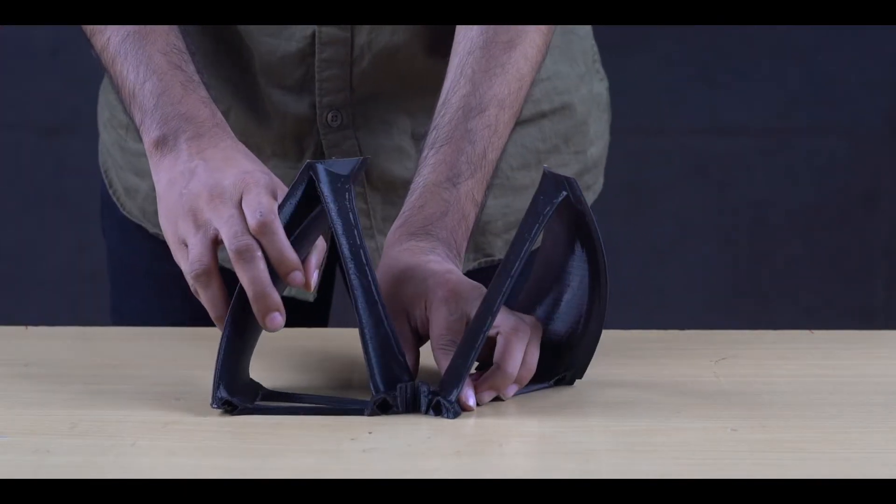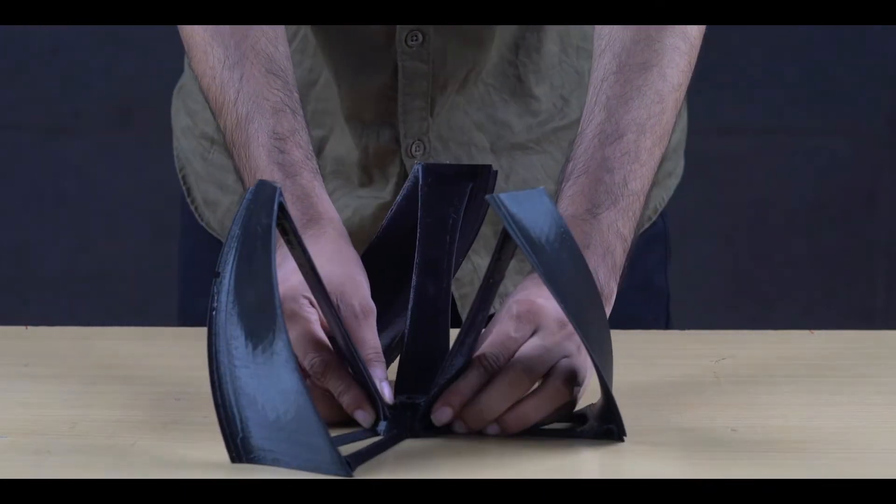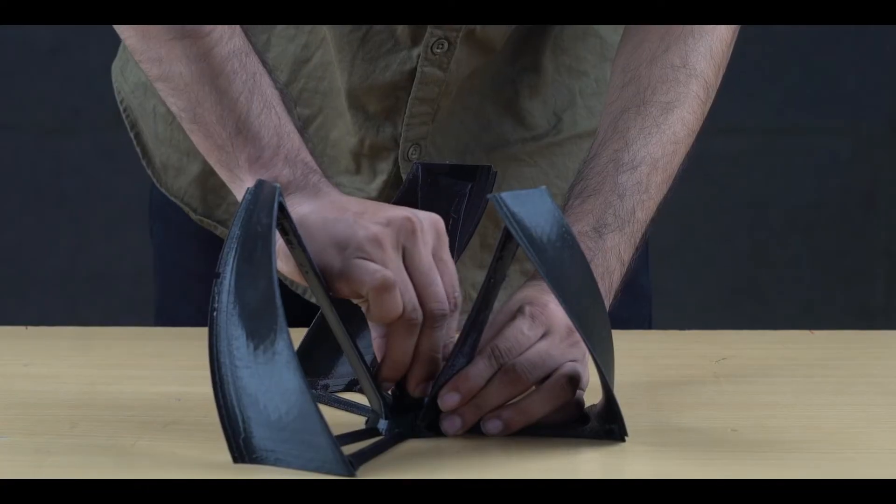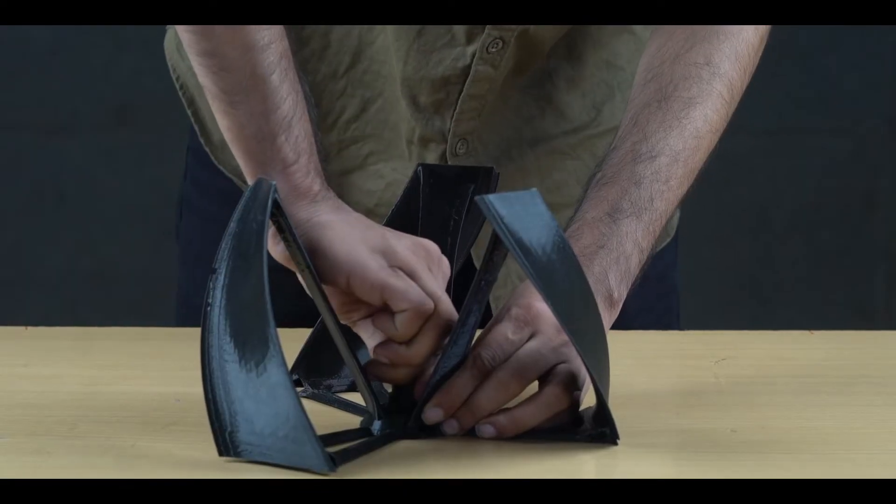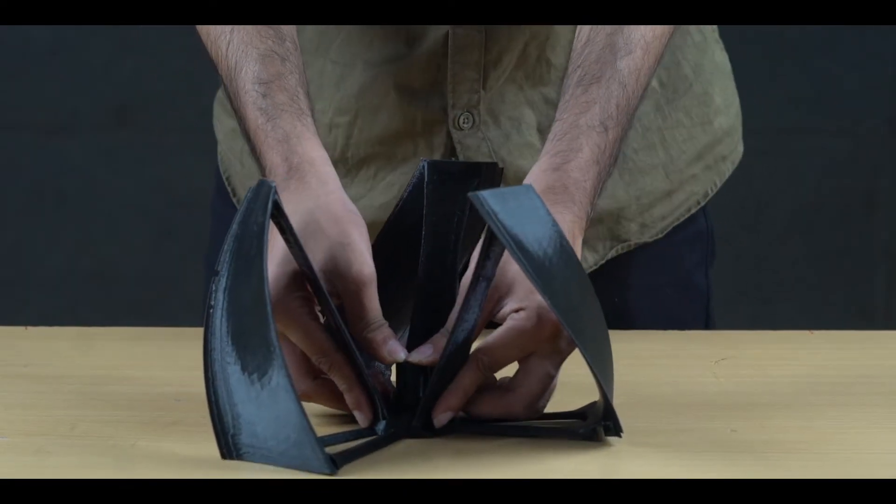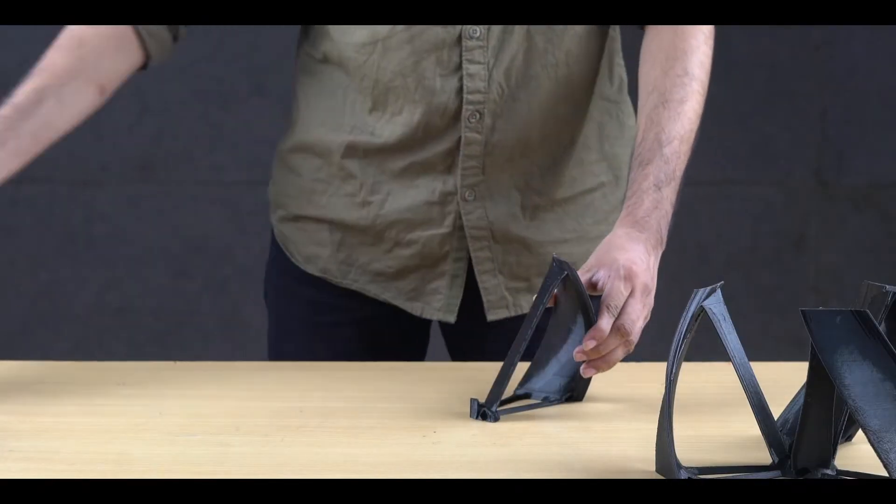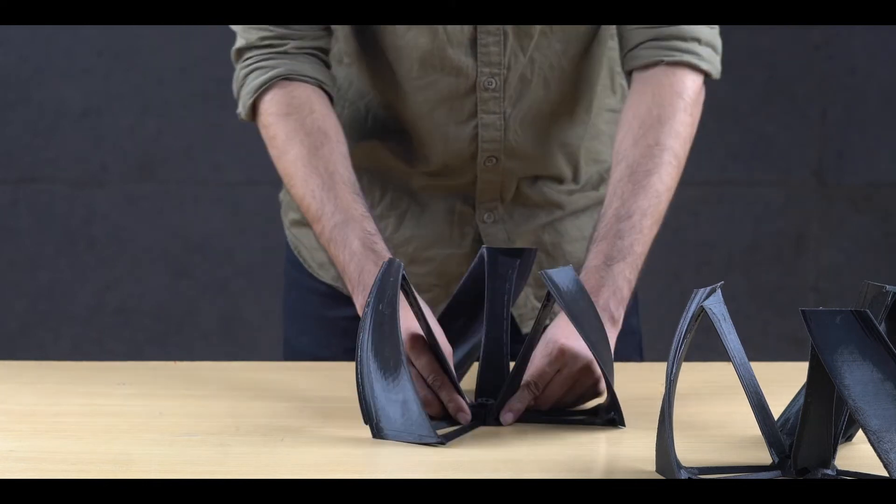Attach the three top wings together using the top lock. Make sure the top lock should be fitted properly over it. Follow the same procedure for the bottom wing also.